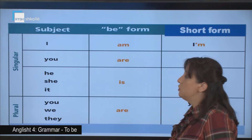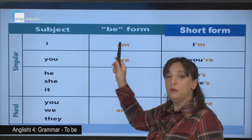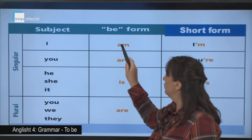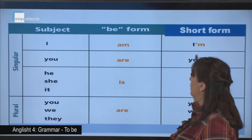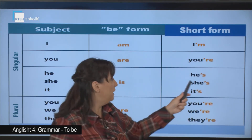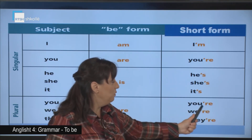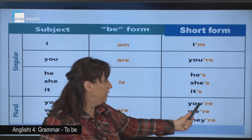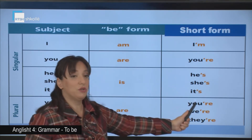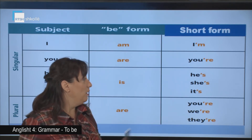How do we write that? For the short forms, we always use an apostrophe and shorten the word. 'I am' — instead of 'am' we put apostrophe: 'I'm'. And so on: 'you're', 'he's', 'she's', 'it's', 'we're'. Instead of using 'are', we use an apostrophe — we remove the 'a' and continue with the rest: 'you're', 'we're', 'they're'.